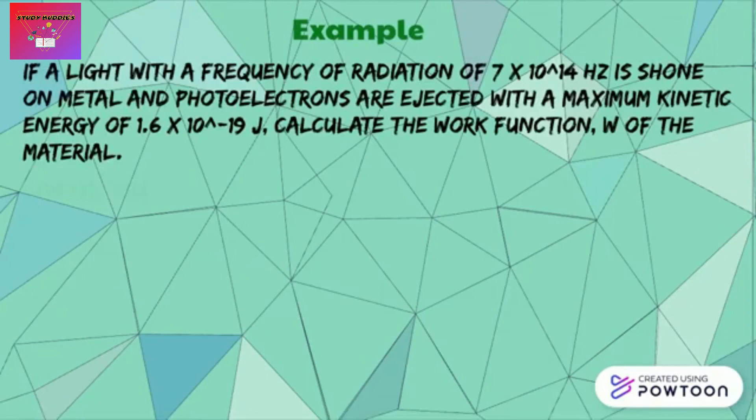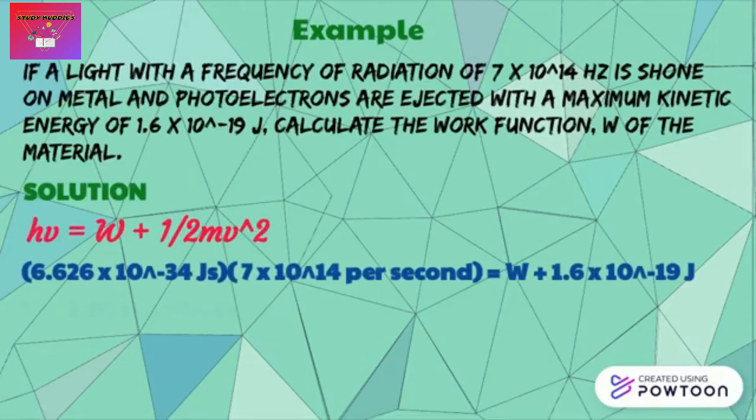Let's do a sample question that uses Einstein's photoelectric equation. If a light with the frequency of radiation of 7 times 10 to the power of 14 hertz is shown on metal and photoelectrons are ejected with the maximum kinetic energy of 1.6 times 10 to the power of negative 19 joule, calculate the work function of the material. The values are already given in the question. Once we substitute the values and solve the equation, we get the value for work function which is 3.0382 multiply with 10 to the power of negative 19 joule.